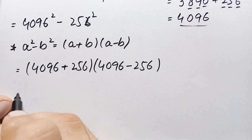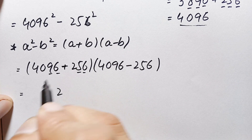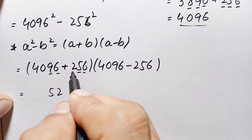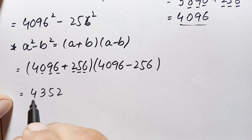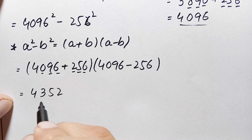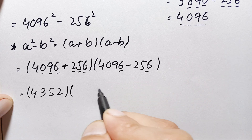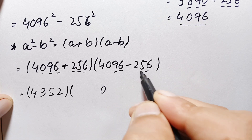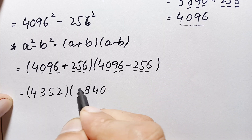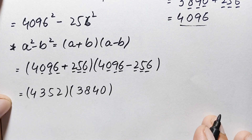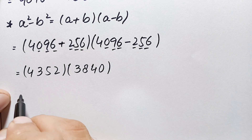Now let's add and subtract these two numbers. Addition: 6+6=12, carry 2; 9+5=14+1=15, carry 1; 0+2+1=3; 4+0=4. So 4096 + 256 = 4352. Subtraction: 6-6=0; 9-5=4 — but 0-2 is not possible so 40-2=38... giving 4096 - 256 = 3840. Now we must multiply 4352 × 3840 without a calculator.